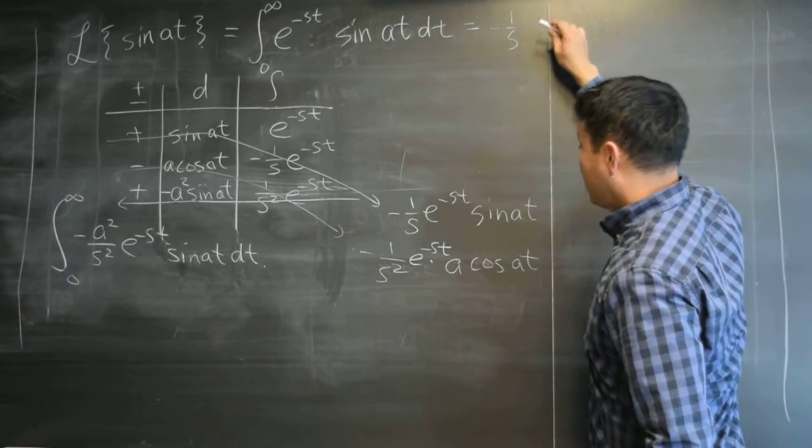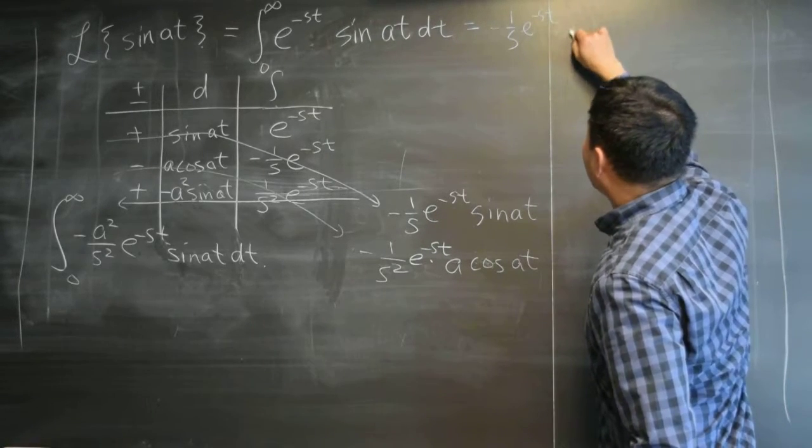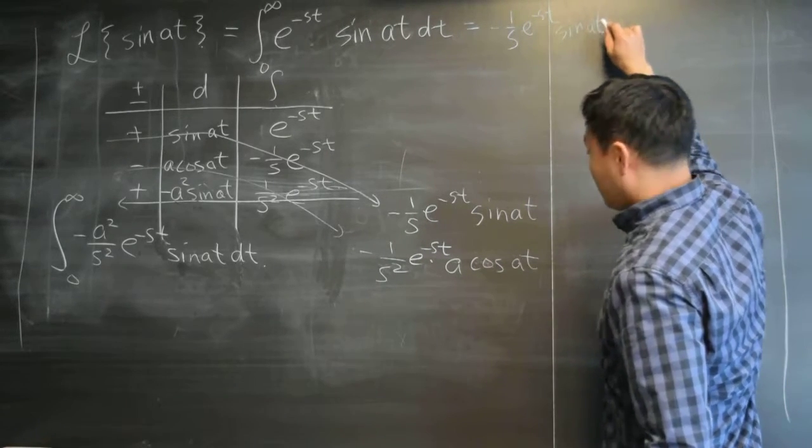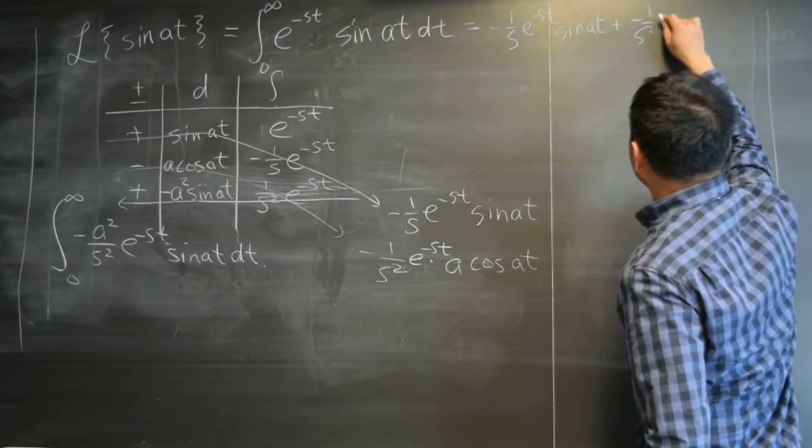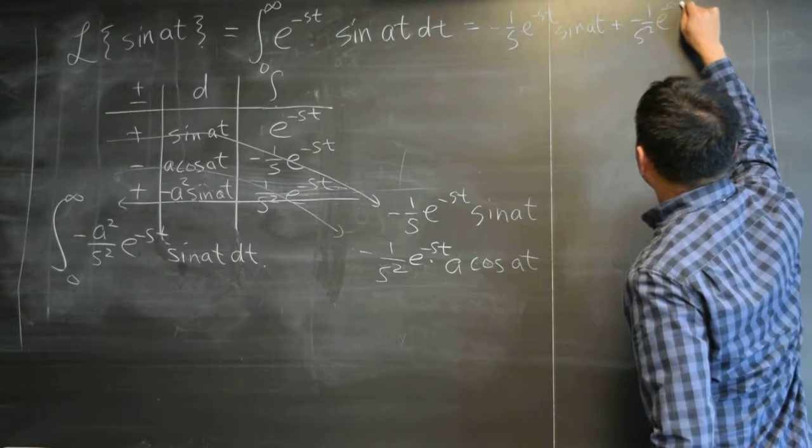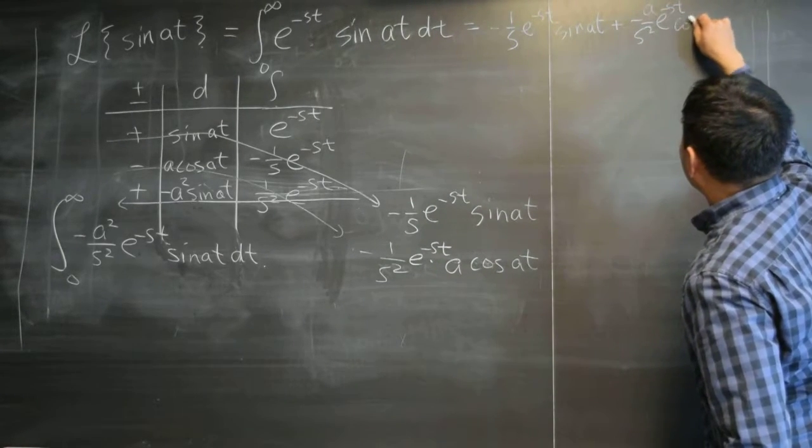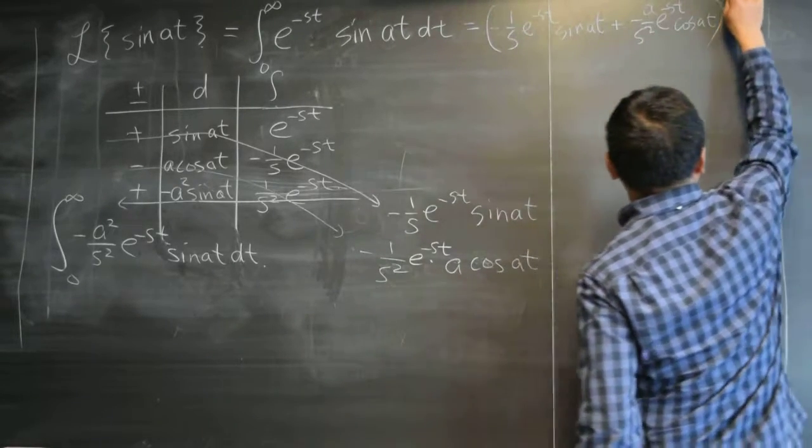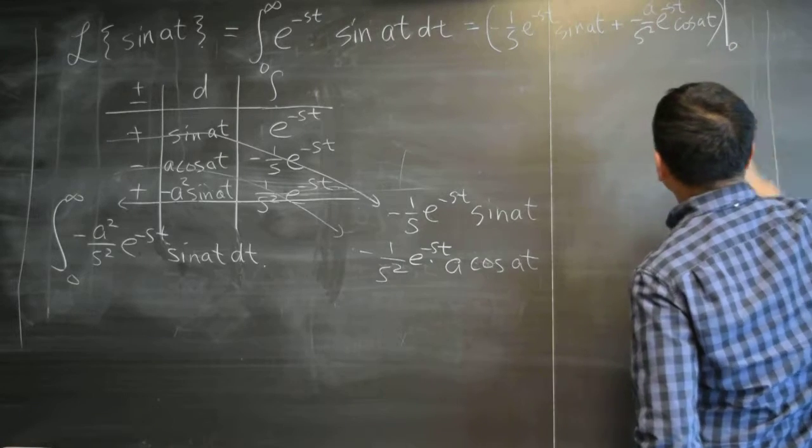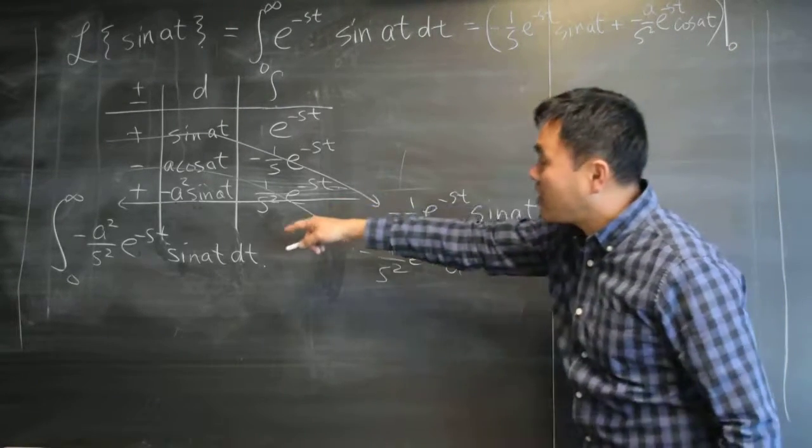Negative one over s e to the negative st sine at plus negative one over s squared e to the negative st. Oh, there's an a here. A cosine at. And both of these you have to evaluate at infinity and zero.